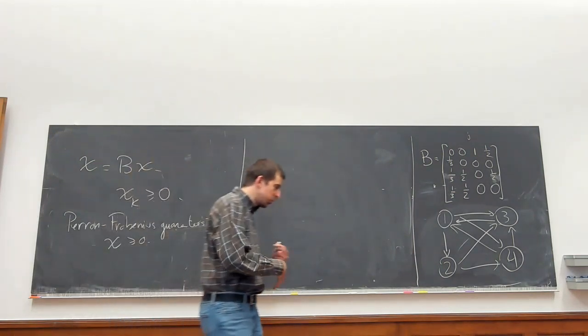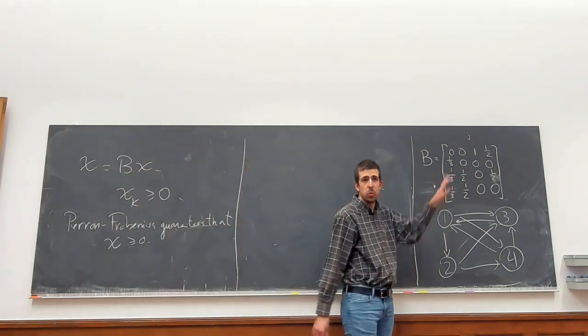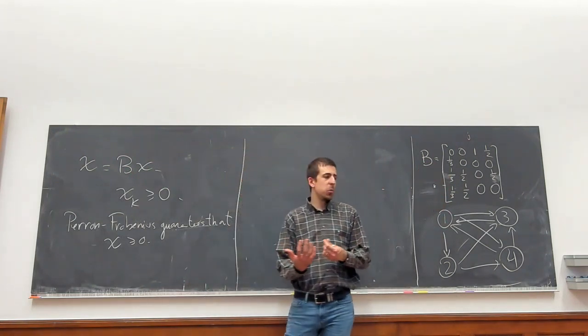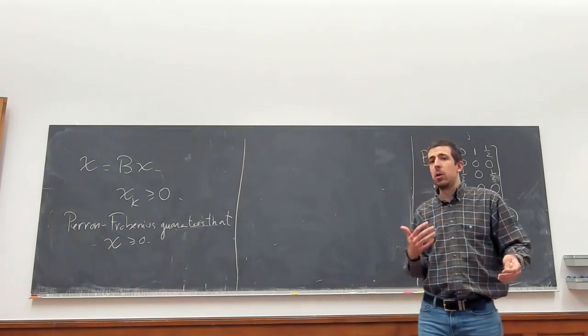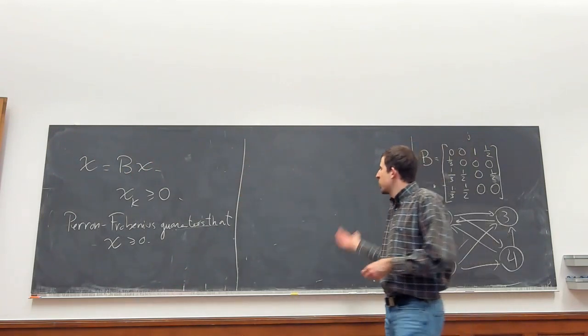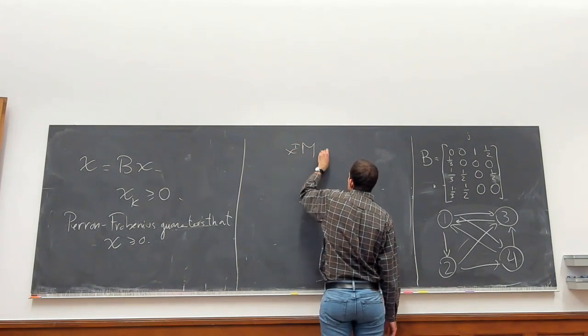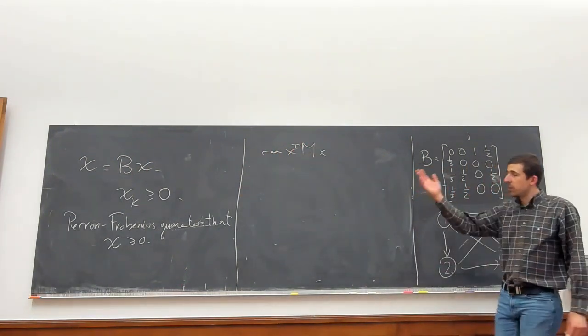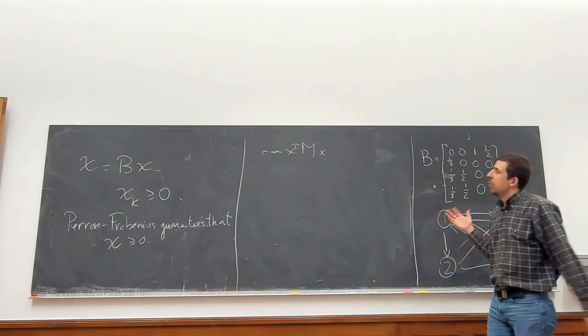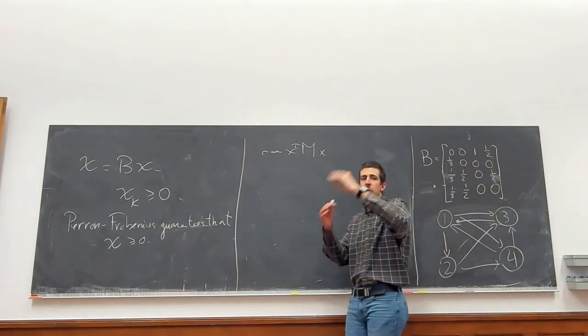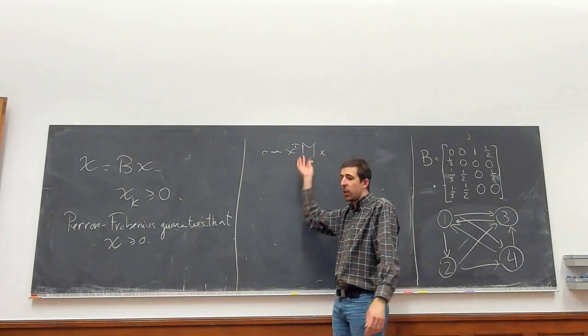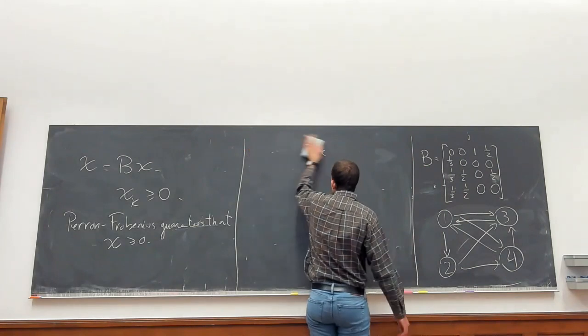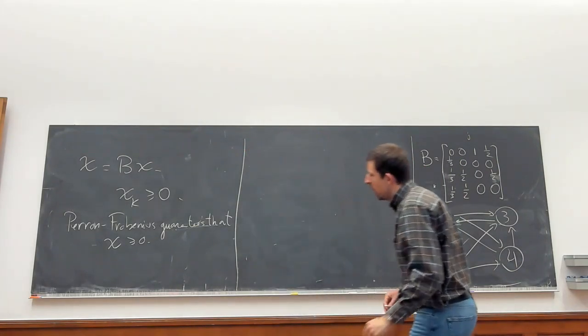Perron-Frobenius guarantees that x would be non-negative entry-wise, and therefore that these are scores. Because otherwise having negative scores around wouldn't make much sense. Now Perron-Frobenius, it's not that hard to show, but in particular it's quite easy to see if the matrix is symmetric. Most of the time the matrix is going to be symmetric. This is one of the few examples where it's not. And if it's symmetric, then the leading eigenvector will be the one that maximizes the quadratic form. If you're maximizing the quadratic form and M has non-negative entries, then you do not want to have entries of x with different signs. Otherwise you're just going to get cancellations that will just make this number lower. A lot of things in symmetric matrices are much easier to see.